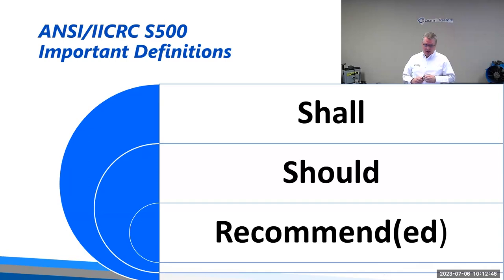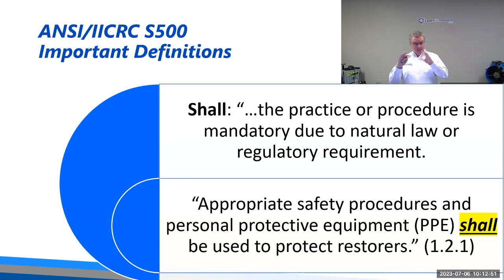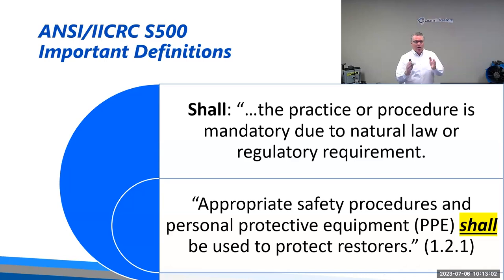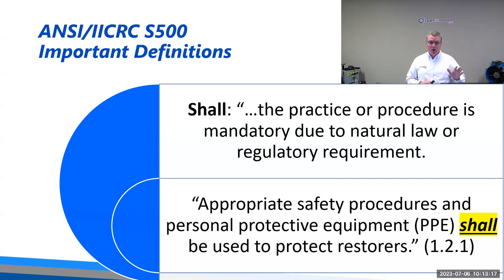When the standard says 'shall,' that means it's mandatory — either mandatory to law, regulation, or a natural law. If I jump up in the air, I shall come back down — law of gravity, nothing I can do about it. An example of a 'shall': appropriate safety procedures and personal protective equipment shall be used to protect restorers. No wiggle room there. If you need PPE, you've got to have appropriate, proper PPE. That's a shall — you've got to do it.